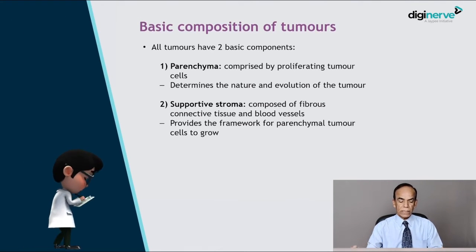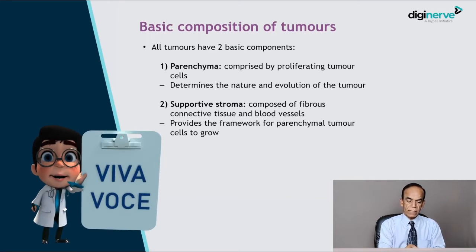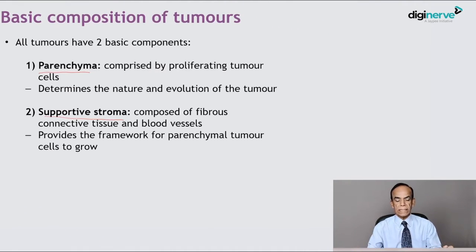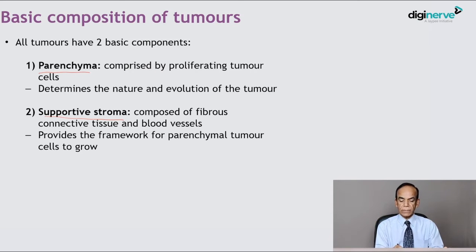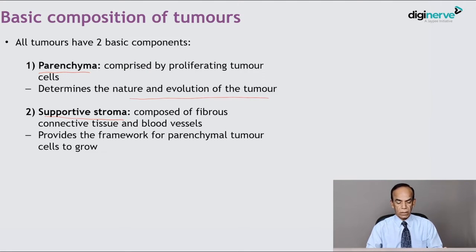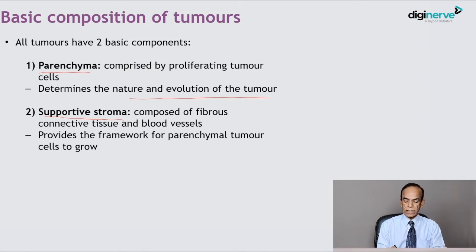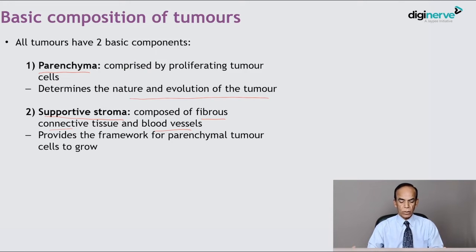There are two basic components of all tumours: parenchyma and a supportive stromal network. The parenchyma is comprised of the proliferating tumour cells and determines the nature and evolution of the tumour. The supportive stromal network is composed of fibrovascular tissue — fibrous tissue and blood vessels — which perfuses the tumour cells and provides the framework for parenchymal tumour cell growth.